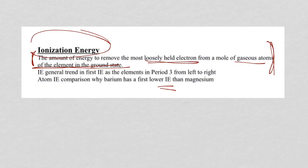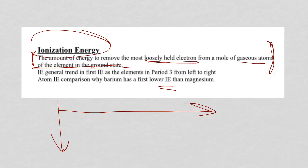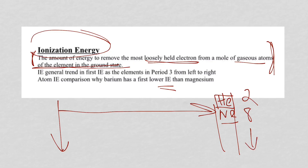You also need to know trends on the periodic table. As you go across a row, ionization energy increases, because you're adding more electrons to an established energy level. Noble gases — starting with helium with two valence electrons, then neon and others with eight — have a very stable configuration. It takes more and more energy to knock out an outermost electron as you move across, with noble gases requiring the most energy in any row.